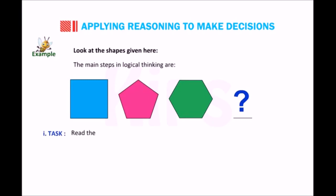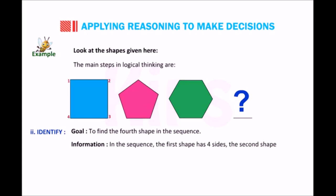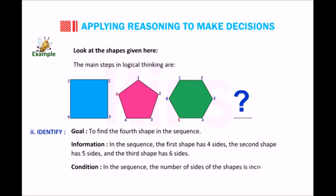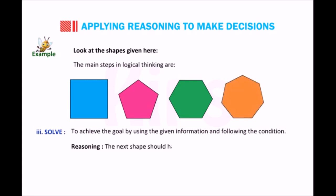For example, look at the shapes given here. The main steps in logical thinking are: Step 1 – Task: read the problem carefully. Three shapes are given — what comes next in the sequence? Step 2 – Identify goal: find the fourth shape. The first shape has four sides, the second has five sides, the third has six sides. The condition is that the number of sides increases by one. Step 3 – Solve: reasoning tells us the next shape should have seven sides (6 + 1 = 7).